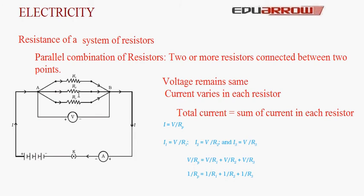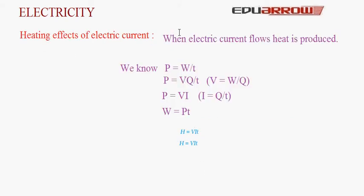Now let us discuss the heating effect of electric current. When electric current flows through a conductor, resistance is offered to its movement, and this resistance produces heat in the conductor — this is known as the heating effect of electric current. Let us calculate the amount of heat produced.